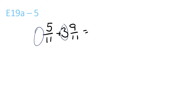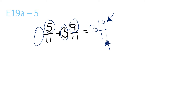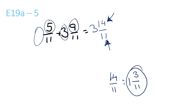Nothing plus 3 is 3. 5 plus 9 is 14, and the 11 stays the same. The top number is larger than the bottom number. So 14 over 11 — 11 goes into 14 once with a remainder of 3 over 11. You have 1 and 3 over 11. Then you plus it with the 3, so it equals 4 and 3 over 11.